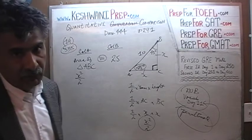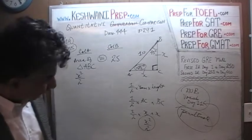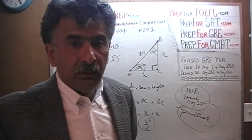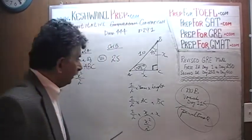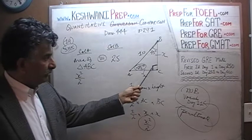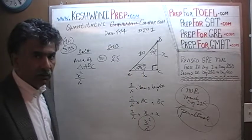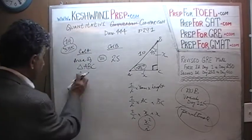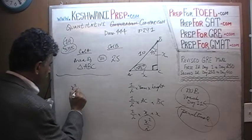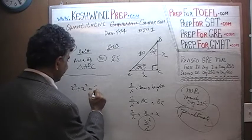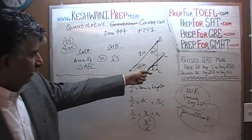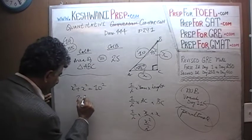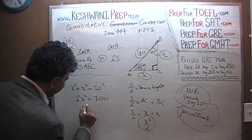The question is how do we find the value of X? That's straightforward — a simple application of the Pythagorean theorem. Since this is a right triangle with the right angle at C and hypotenuse 10, we have X squared plus X squared equals 10 squared. That means 2X squared equals 100, which means X squared equals 50.